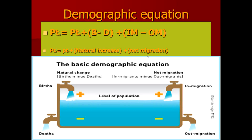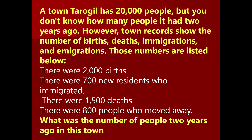The demographic equation allows us to calculate the change in population by knowing births, deaths, in-migration, and out-migration. Natural increase is calculated as births minus deaths, and net migration is in-migration minus out-migration. Knowing the population at a specific time and these parameters, we can calculate the change in population.